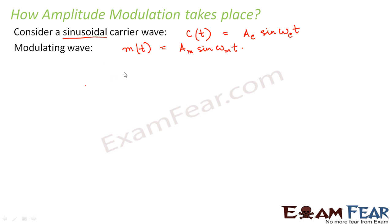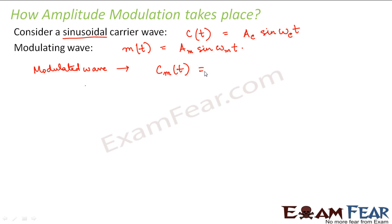Now what happens in amplitude modulation? This modulating wave will combine with the carrier wave. The amplitude of the carrier wave will get modified as per the modulating wave. So what would be the modulated wave after modulation? It will be Cm of t — the carrier wave which is modulated due to this message signal. What will change in the carrier wave? Only the amplitude part will change; the remaining part will remain the same.